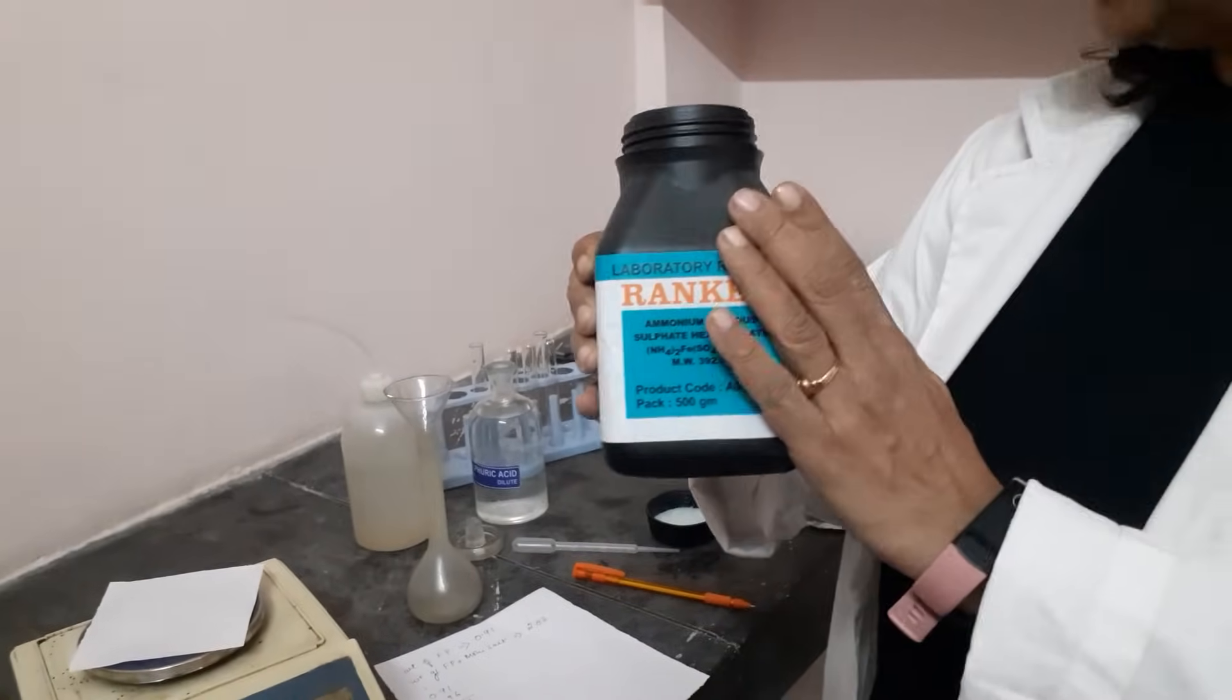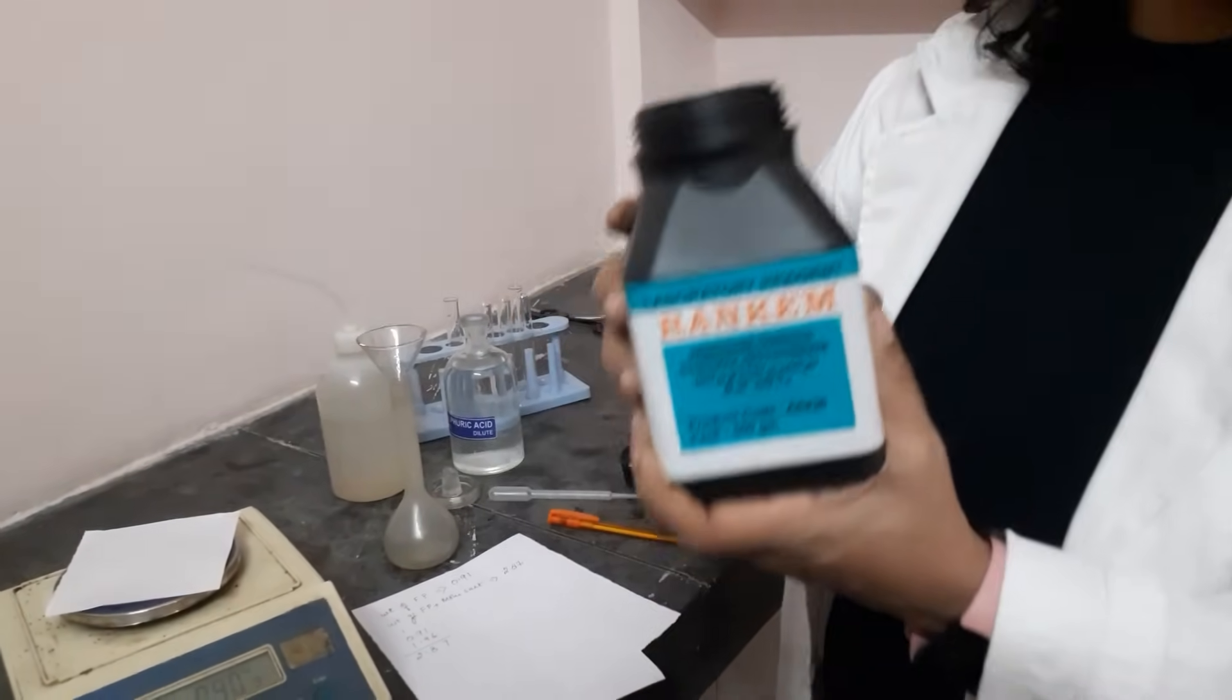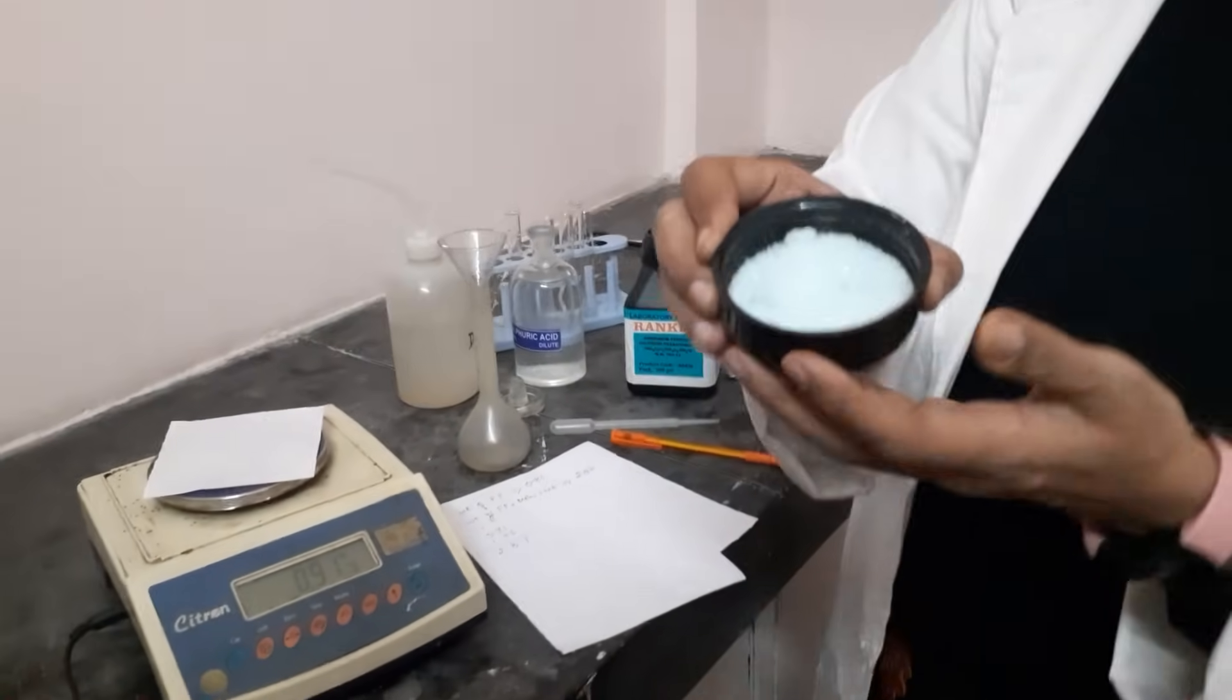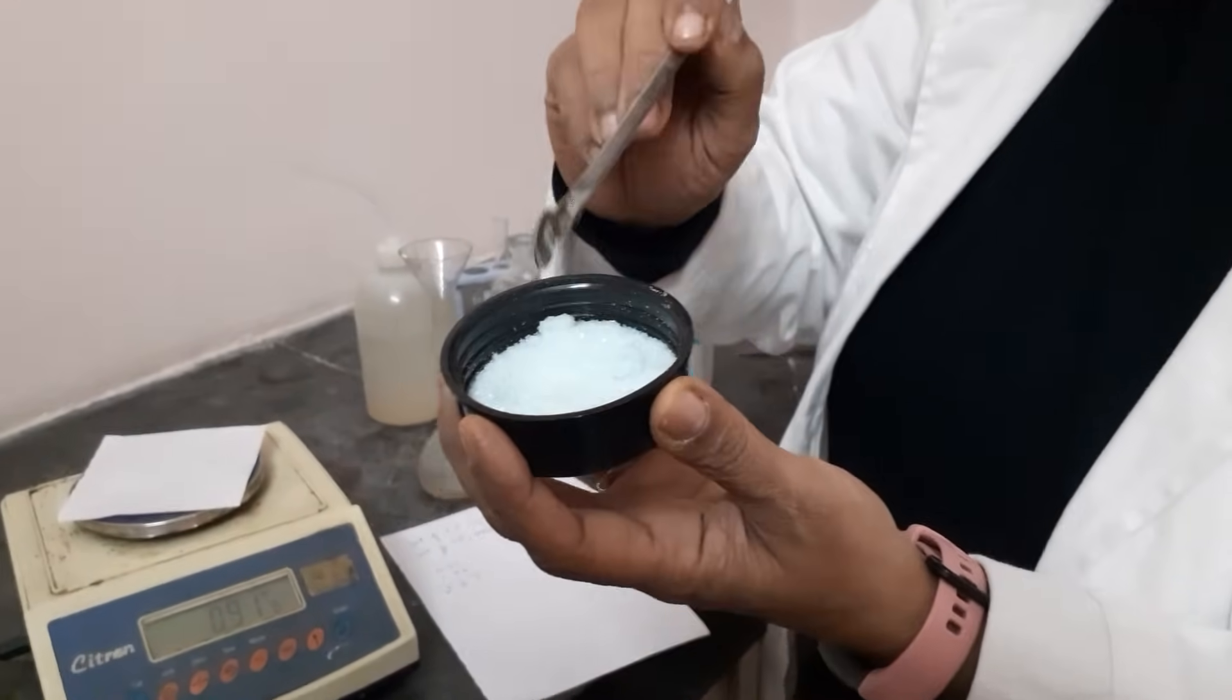So now I will start adding the Mohr salt to the paper. What is this box? This black colored box is polythene because it easily undergoes aerial oxidation. As I said it is green colored solid, also it should be crystalline. You can see it is so fine.